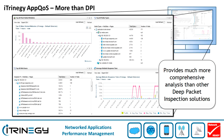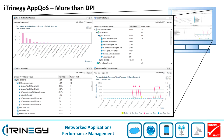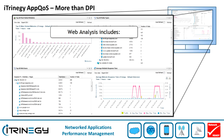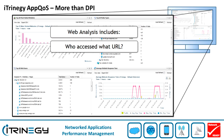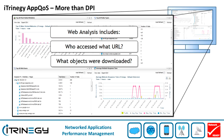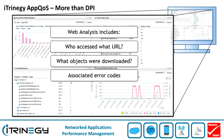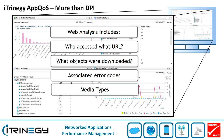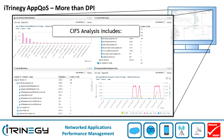The APCOS analysis is much more comprehensive than the usual deep packet inspection signatures quoted by other vendors. For example, the APCOS web analyses include who accessed what URL, what objects were downloaded,